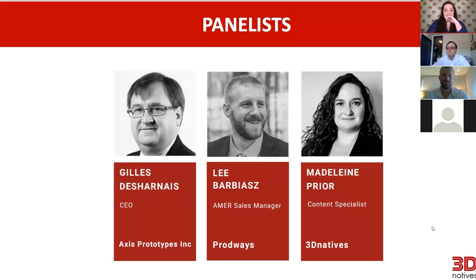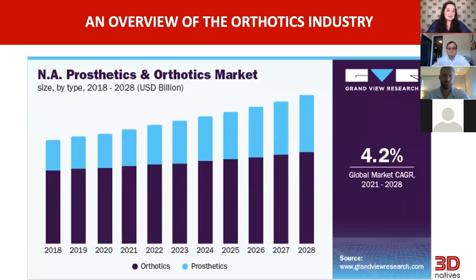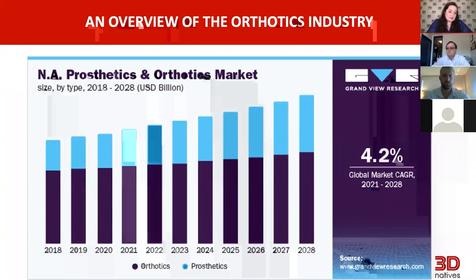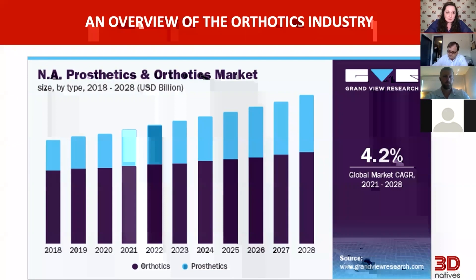Today we'll be talking especially about orthotics and their creation with SLS 3D printing. Looking at the prosthetics and orthotics market in North America, this market is growing quite fast — about a 4.2% CAGR expected from 2021 to 2028. The bulk of that is in orthotics. People like to talk about prosthetics, but when we talk about healthcare and especially personalized healthcare, orthotics plays a very large role.